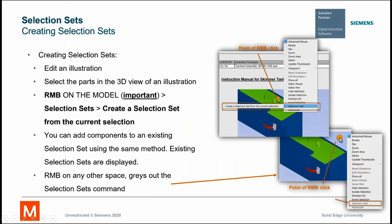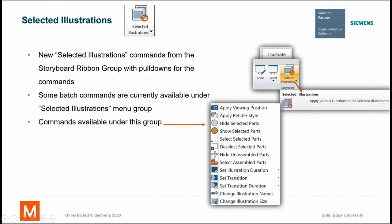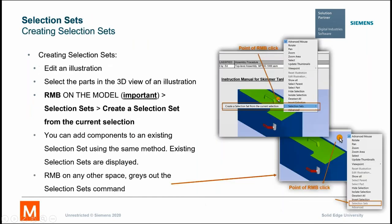To create selection sets, you first edit an illustration, select the parts you want in that selection set, then right-click on the model with those selected and you can create the selection set from there. If you click in space somewhere else and right-click, that will gray out the selection set command. You can also select multiple illustrations and perform a batch application to them — hide selected parts on many illustrations or set the transition on many of them at once, and change your illustration size. It's a way to affect many illustrations versus just one.